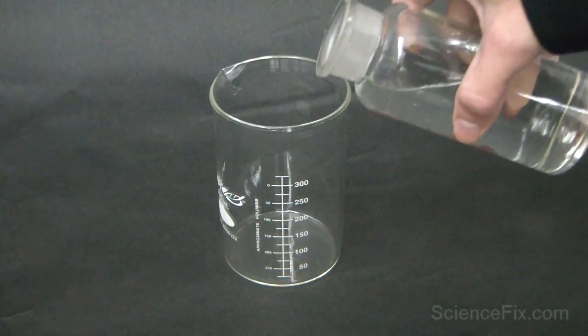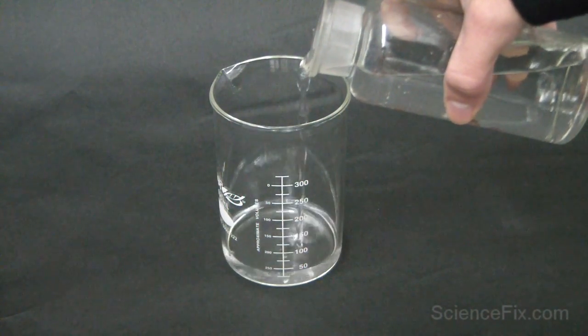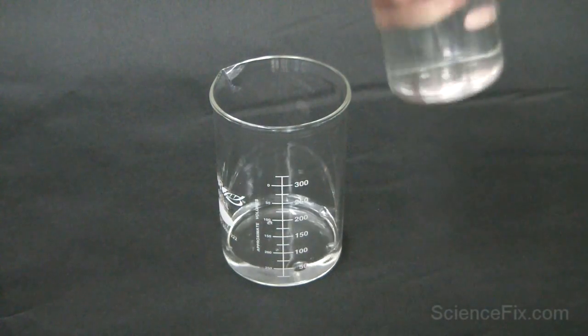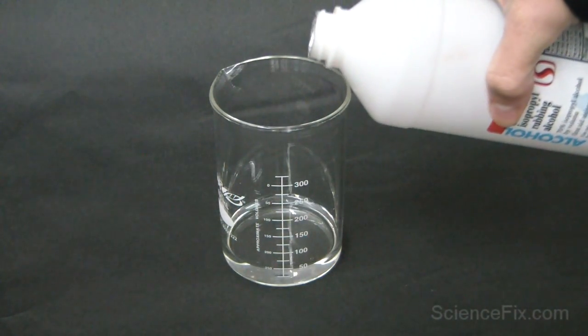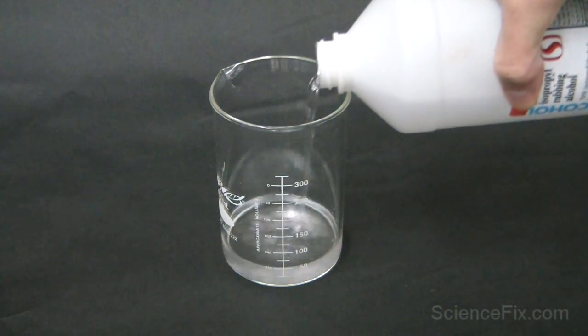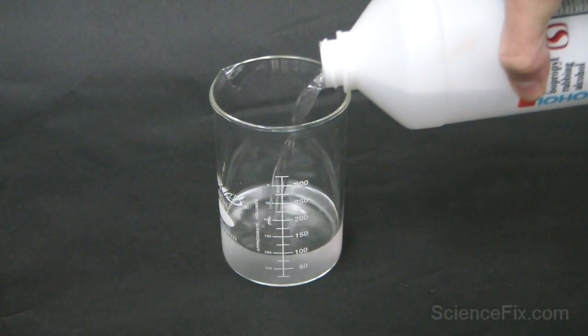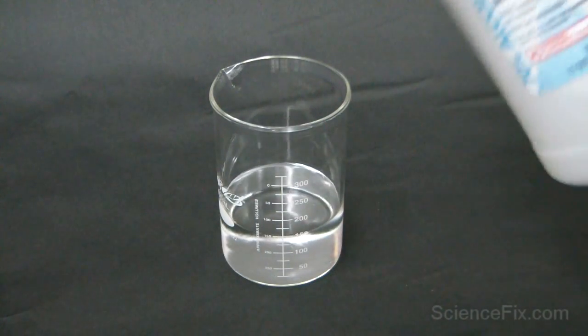In the beaker goes 50 milliliters of water. Next, 100 milliliters of isopropyl alcohol goes into the beaker. So it's about two parts isopropyl alcohol to one part water.